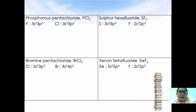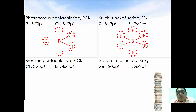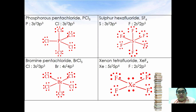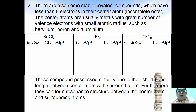Other examples of molecules that can have more than eight electrons are phosphorus pentachloride (PCl₅), sulfur hexafluoride (SF₆), bromine pentachloride (BrCl₅), and xenon tetrafluoride (XeF₄). Most of these central atoms have either 10 or 12 electrons, while the surrounding atoms are in octet arrangement.